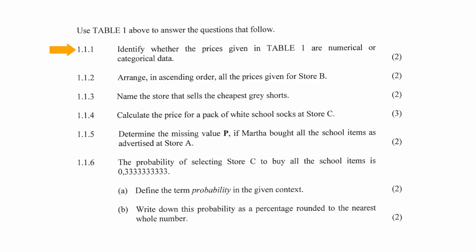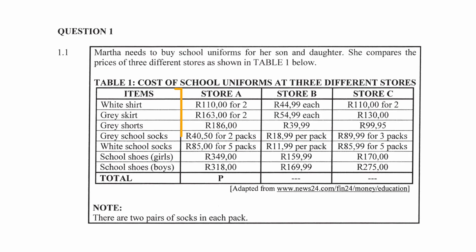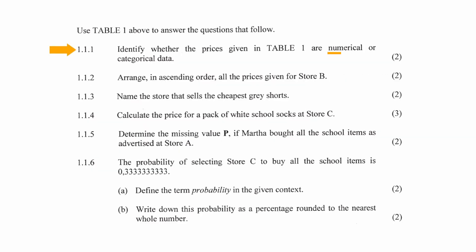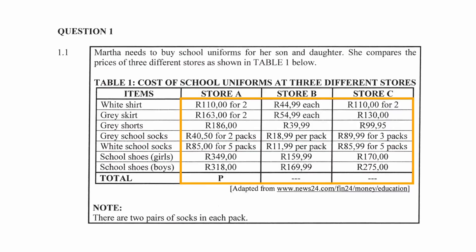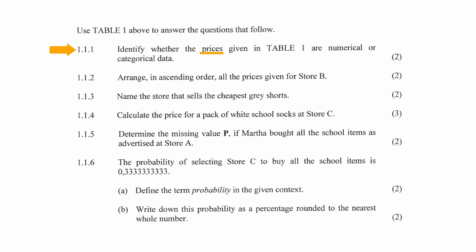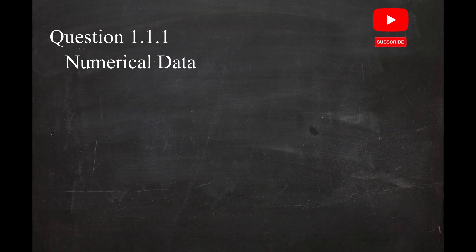In question 1.1.1, you are instructed to identify whether the prices given in Table 1 are numerical or categorical data. Categorical data is data that can be divided into groups or categories, like the different items that need to be purchased, while numerical data is data that is measured or counted, like the prices of the different items. Since the question asks you to base your decision on the prices given in the table, this data is numerical data.